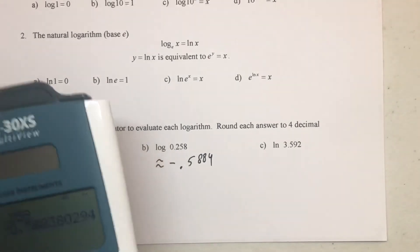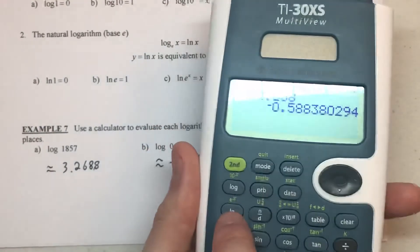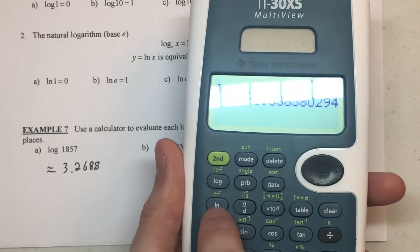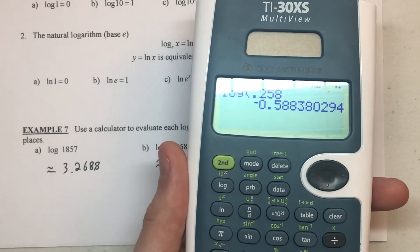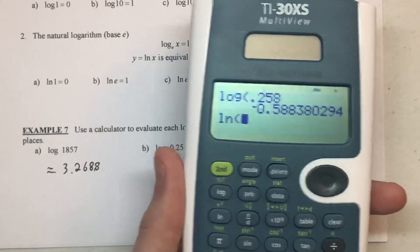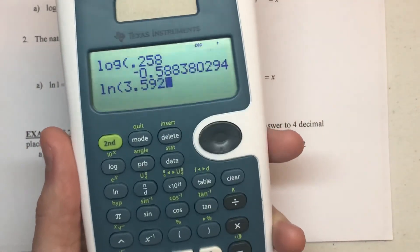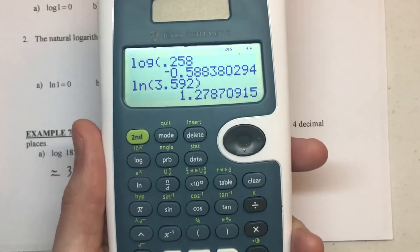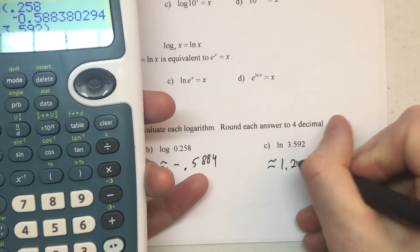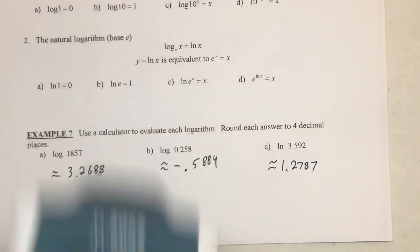Now for ln, your calculator should have that as well. It should be right there under your E. There should be the ln button, usually with the E as the shift of it. So you can use ln of the 3.592, and that gives us approximately 1.2787.